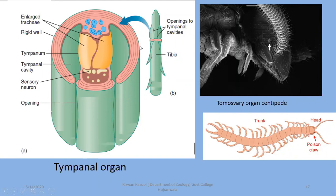The tympanal organ has been shown in a cross section. In this cross section you can see the openings of the tympanal organ. Like all other receptors, tympanal organs possess sensory neurons which carry information of vibration. The tympanal cavity and tympanum are key structures — the vibration is generated at the tympanum, which is covered by a rigid wall with an enlarged trachea.